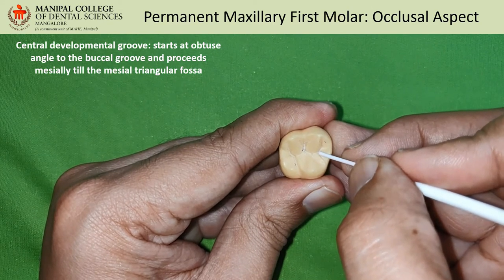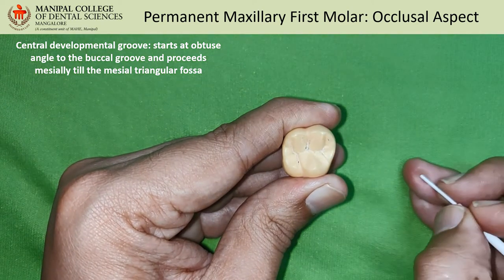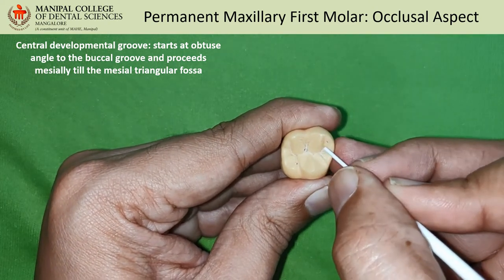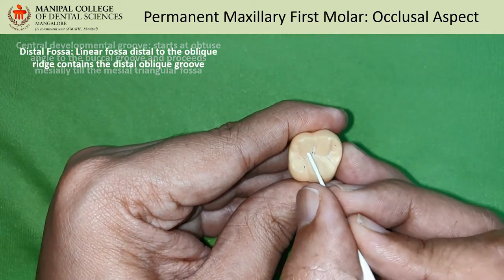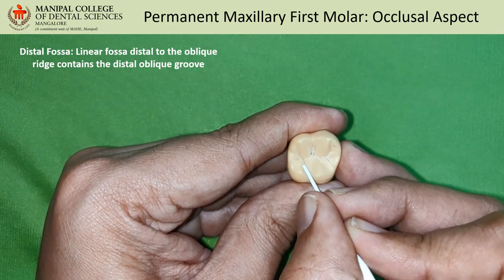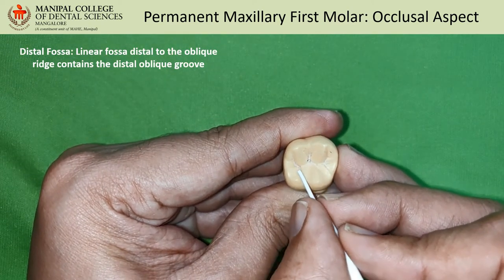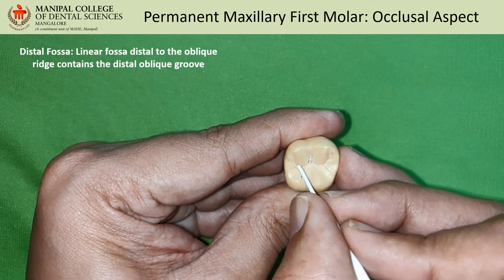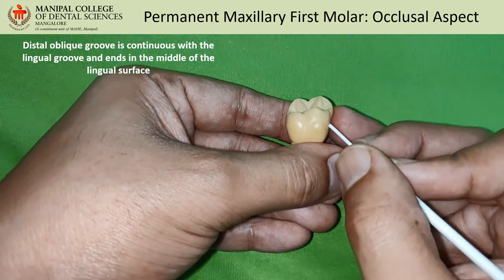From the mesial triangular fossa, secondary developmental grooves radiate towards the mesial marginal ridge. The triangular area formed here is the mesial triangular fossa, which is the first minor fossa. The central fossa is the first major fossa. The other major fossa is located distal to the oblique ridge — a linear fossa confluent with the distal oblique groove, which follows the direction of the oblique ridge. This distal oblique groove continues with the lingual groove and ends somewhere in the middle of the lingual surface.